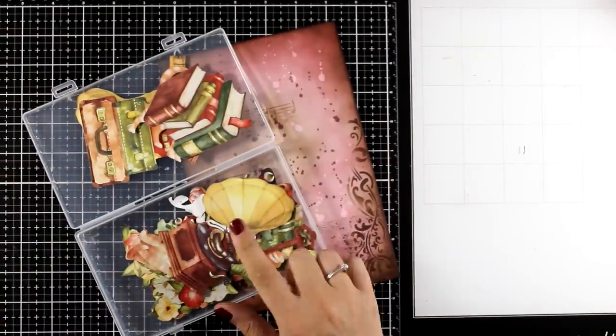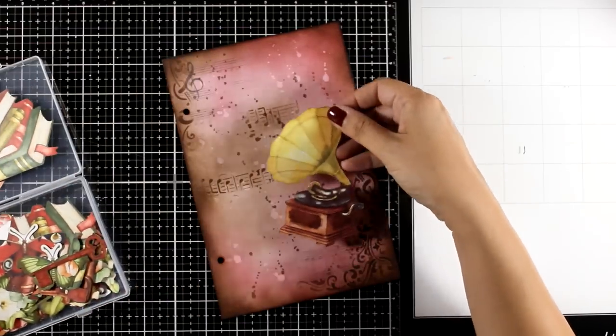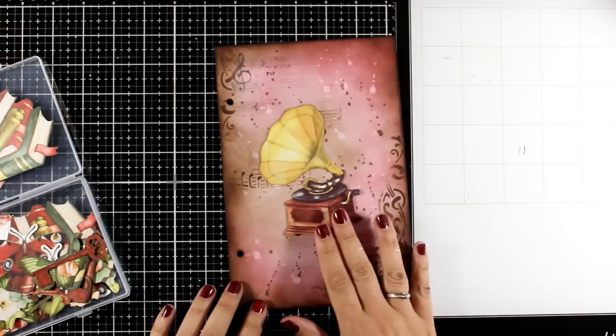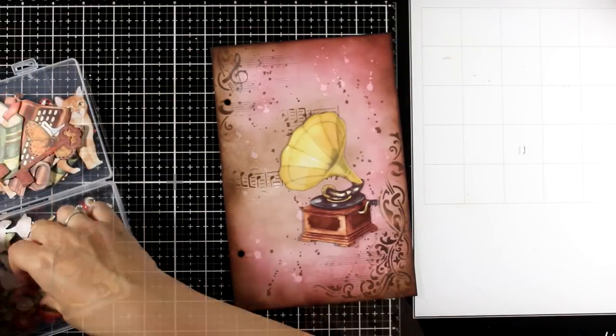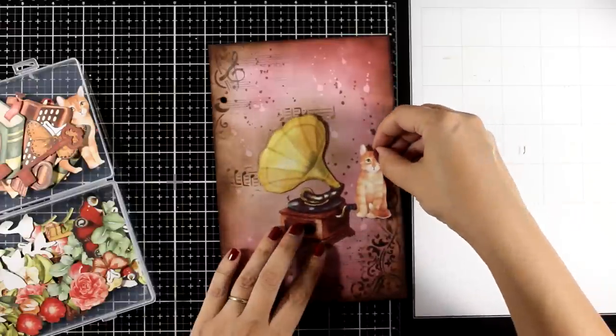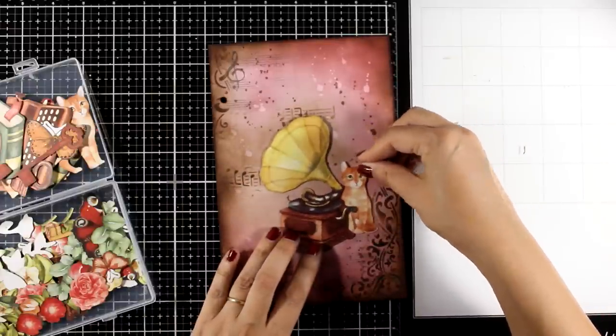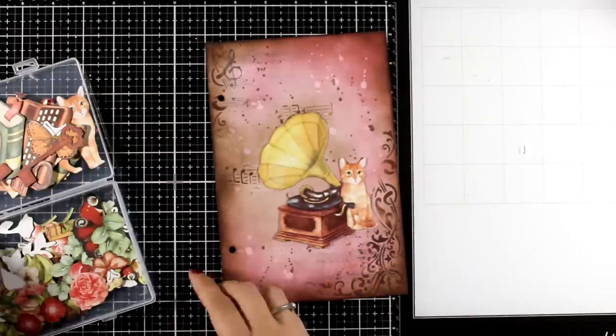And I'm going to work on my focal points. This is the ephemera pack from my latest collection, and for today I'm going with the gramophone and I will combine it with one of the cutouts. I thought it was super cute, so here is ginger on my page.